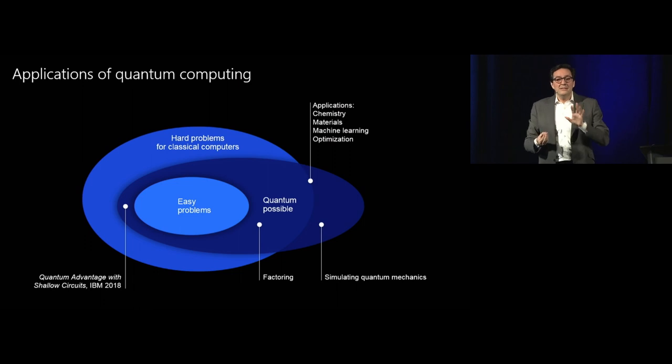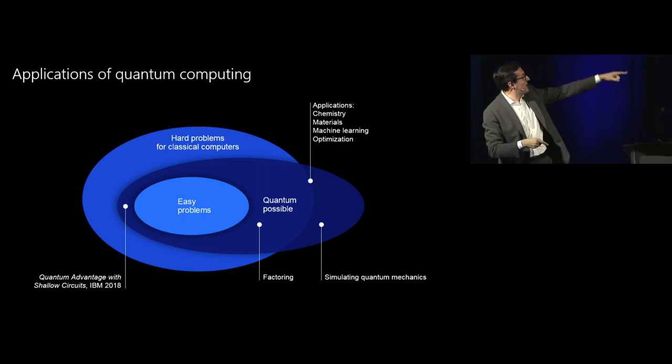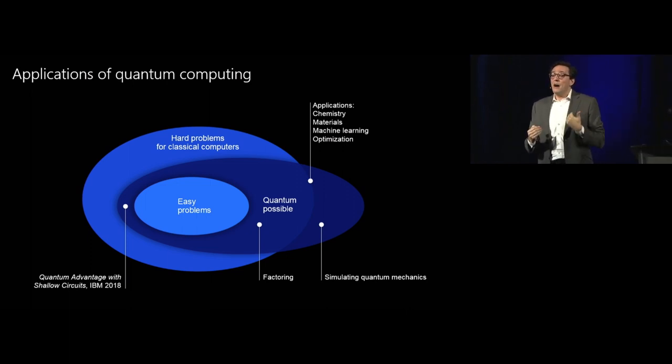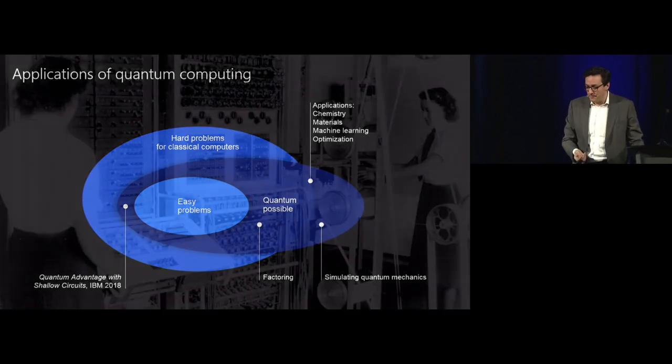Quantum computers will not solve all of those problems, but that is the only technology we know where there's a subset of those problems that can be tackled. If you look at factoring as an example, that's a problem that is hard to compute but easy to verify that you have the right answer. When you simulate quantum physics or chemistry, it's both hard to calculate and hard to verify. So it's a different complexity class altogether called BQP.